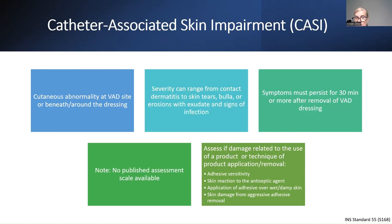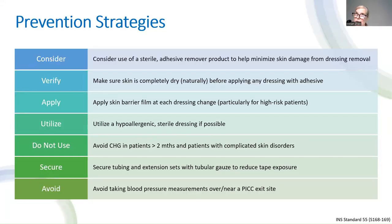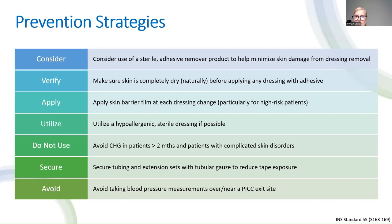Also consider whether damage was caused by aggressive adhesive removal. Prevention strategies for CASSIE include using a sterile adhesive remover when removing the dressing, ensuring antiseptic is completely dry before applying a dressing, using barrier film especially for high-risk patients, utilizing a hypoallergenic sterile dressing when possible, and avoiding CHG in patients under two months old or those with complex skin disorders. Secure tubing with tubular gauze rather than tape pulled around the arm, and avoid blood pressure measurements over or near a PICC exit site.